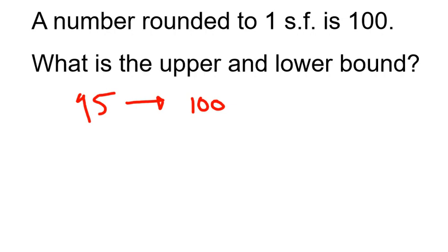Now, when we do bounds, we have a tendency to go, well, there's a difference of 5 there. So our upper bound would surely be 105. The difference of 5 there.